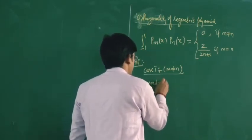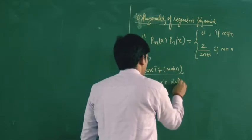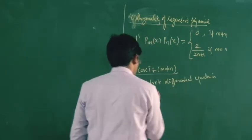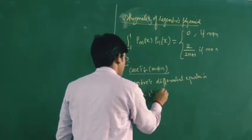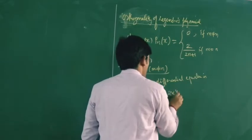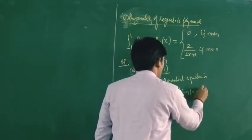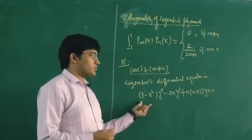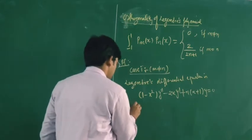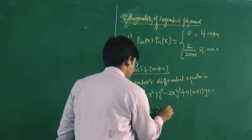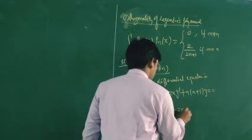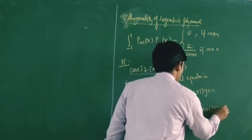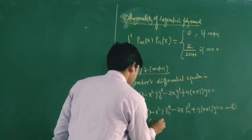The Legendre differential equation is (1 - x²)y'' - 2x·y' + n(n+1)y = 0. As P_n and P_m are solutions of this equation, we have equation number 1 for P_n and similarly equation number 2 for P_m.